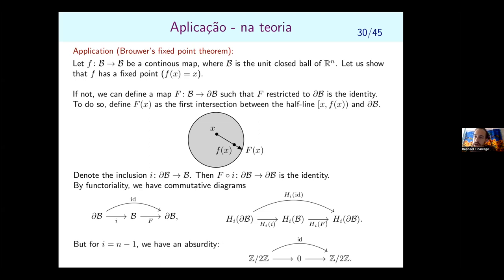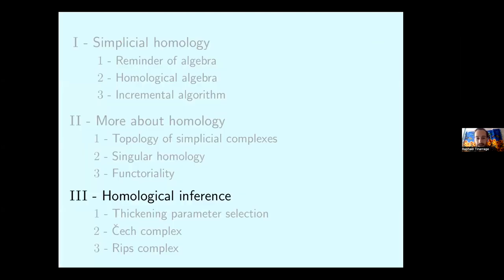Functoriality is a very powerful property. With it, you can prove Brouwer's fixed-point theorem: any continuous map from the ball in ℝ^n to itself has a fixed point. I won't explain the proof here, but it is on my website with the slides. Now let's enter into applied topology and the initial problem of TDA: homological inference.